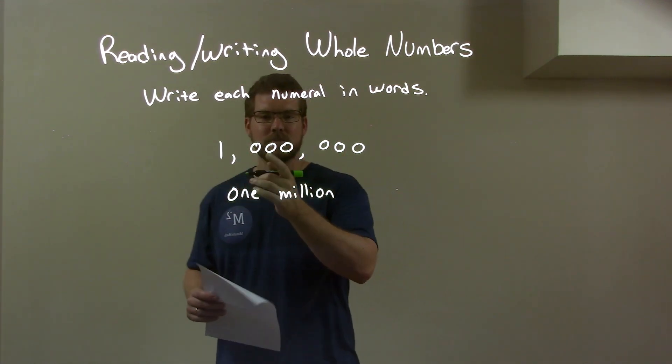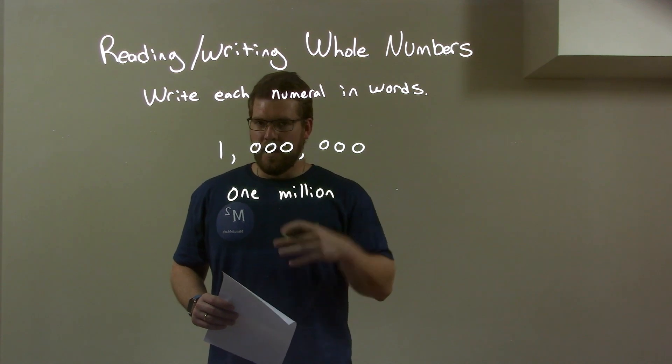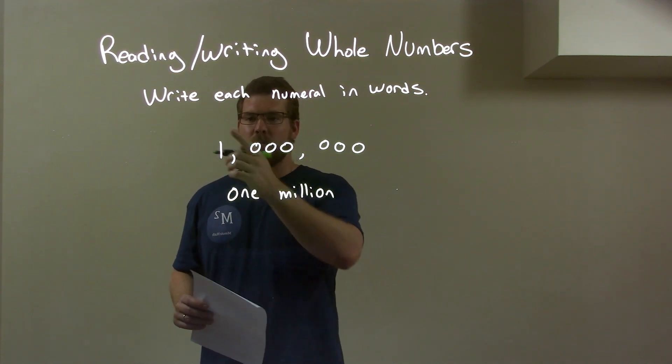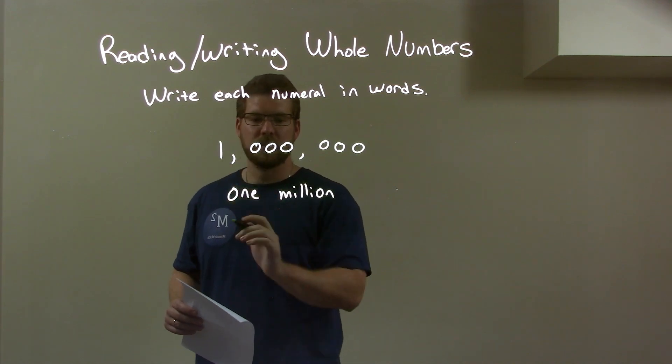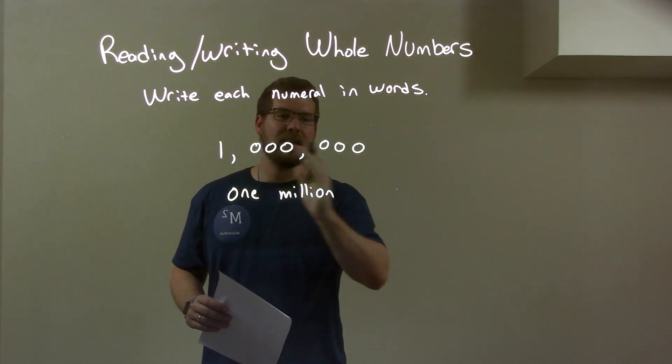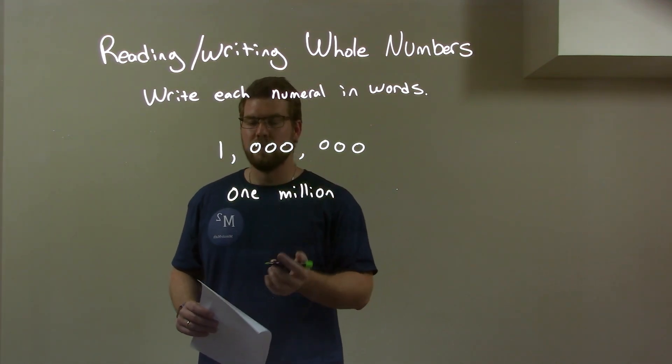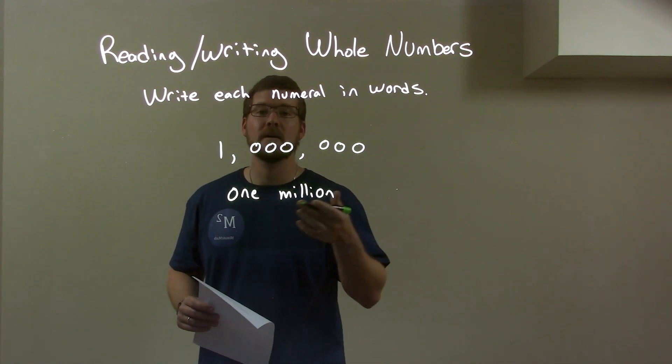So quick recap, we have one, zero, zero, zero, zero, zero, zero. We're going to write this in words. Well, we have a one there, so we put one first, we start with the left. And that's in the millions section, so we have a million. Since there's nothing else written besides zeros, we just have our answer now: one million.